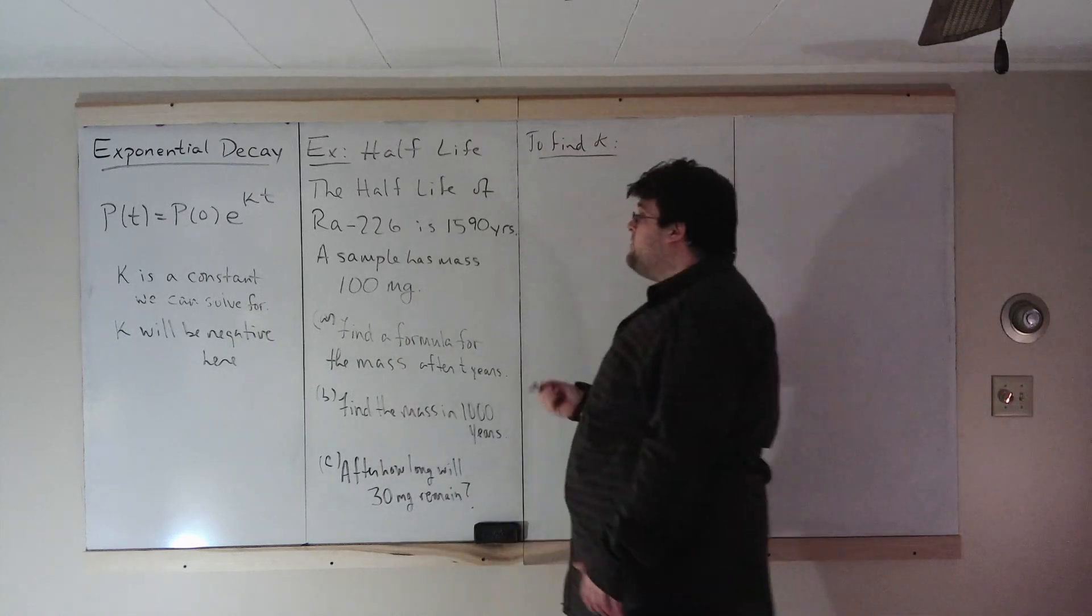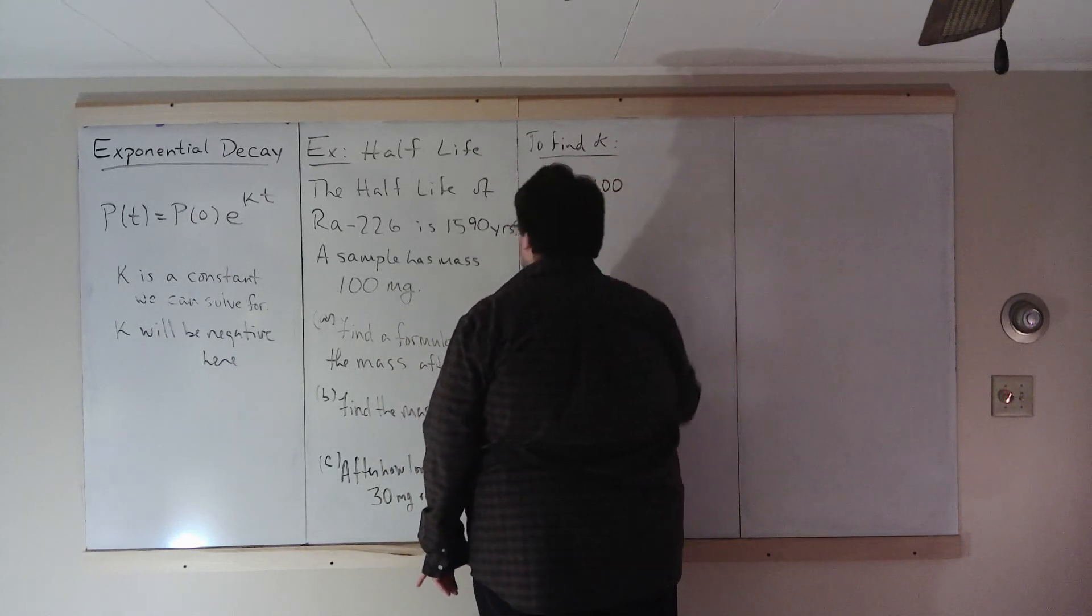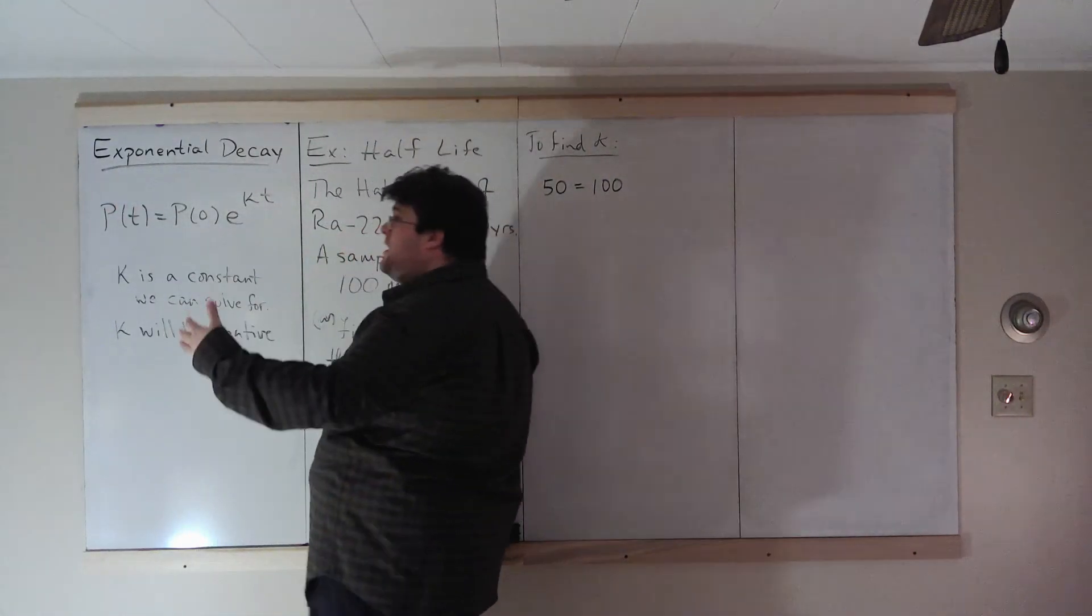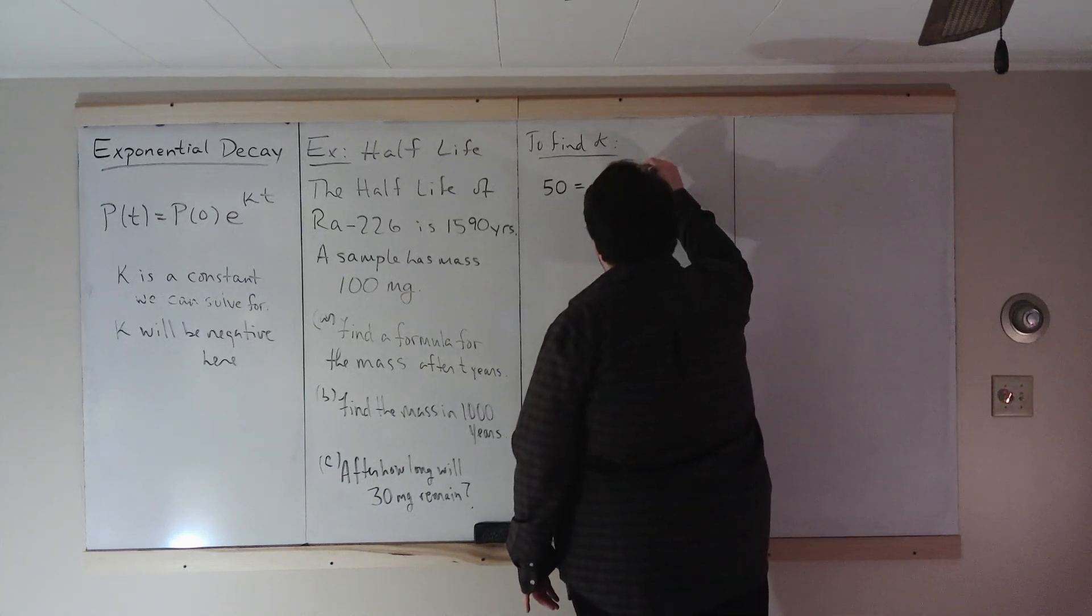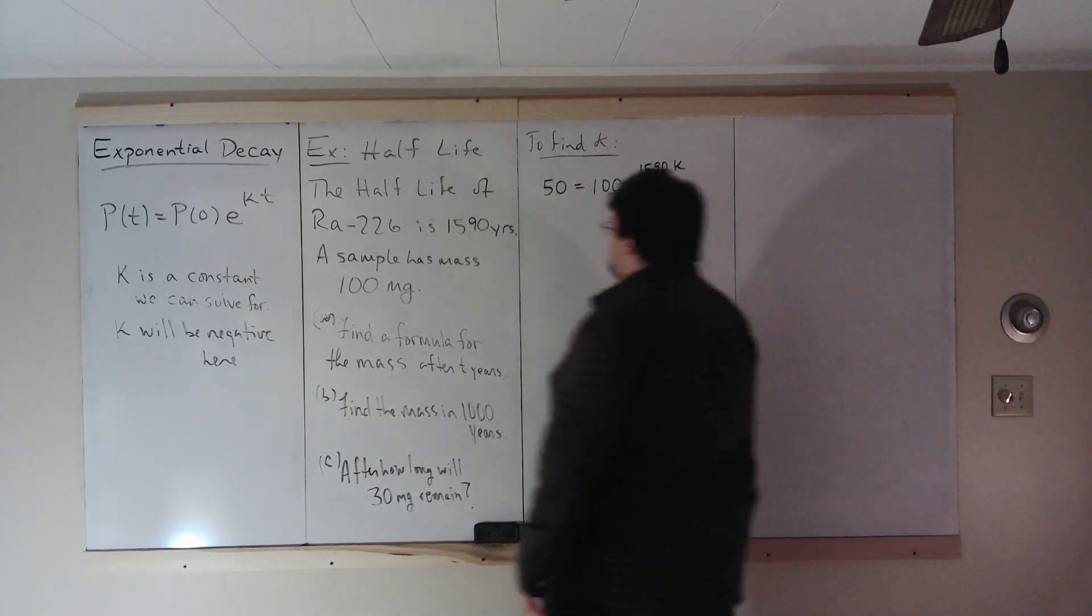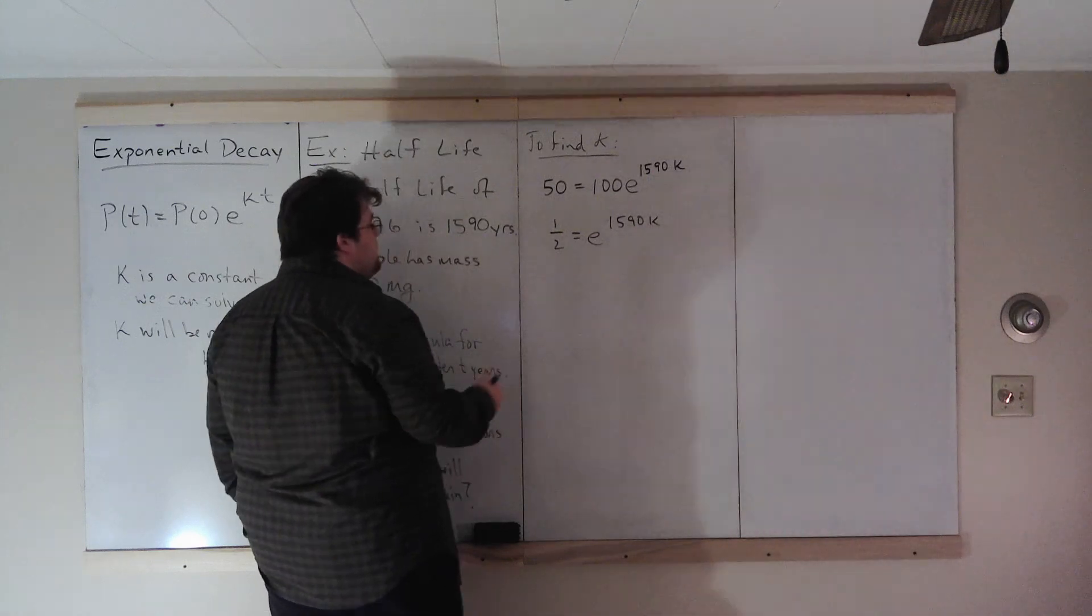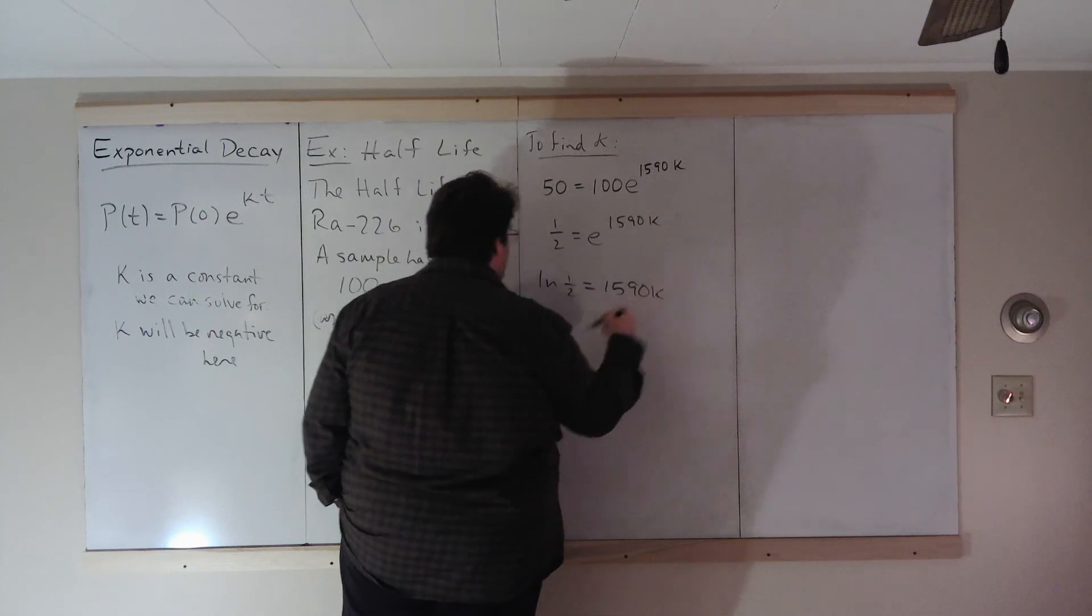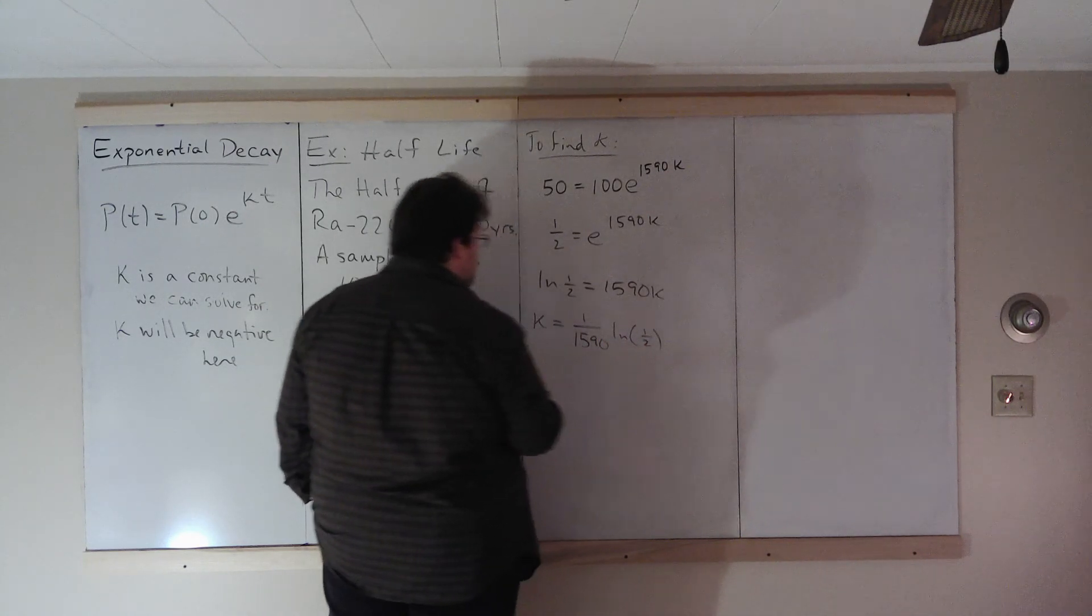To find k, we're going to just use the half-life information. So at time 0, we have 100. In 1,590 years, we have 50. So at time 1590, we have 50 left over. We start with 100. So 100 times e to the k times 1590. We want to solve this for k. Divide by 100, you get 1 half is e to the 1590k. Solve this. We need to get rid of the e. So natural log of 1 half is 1590k. Solve for k. You get k is 1 over 1590 natural log of 1 half.